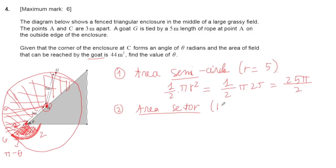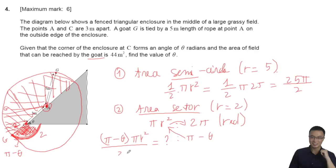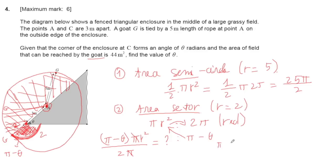The area of the sector with radius equal to two: the area of a full circle is pi r squared, which equals 4π for r equals 2. To find the area of the sector with angle pi minus φ, we take the proportion (pi minus φ) divided by 2π, multiply by pi r squared, the 2π cancels, and you get the sector area equals (pi minus φ) times 4 divided by 2, which simplifies to 2(pi minus φ).